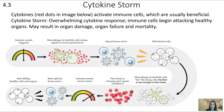Cytokines are an important part of the immune system and are usually beneficial. However, a cytokine storm is where you have an overwhelming cytokine response — an overproduction where immune cells begin attacking healthy organs. This can result in organ damage, organ failure, and even mortality. This shows that signal transduction pathways like cytokine signaling can play a big role in our health.